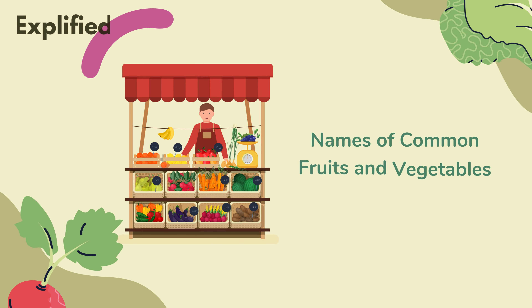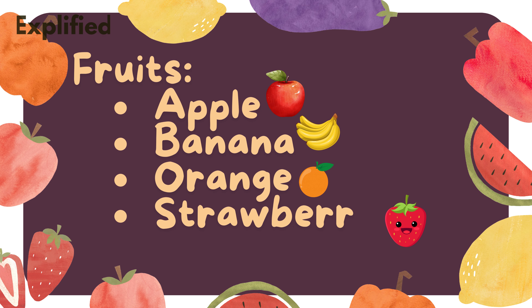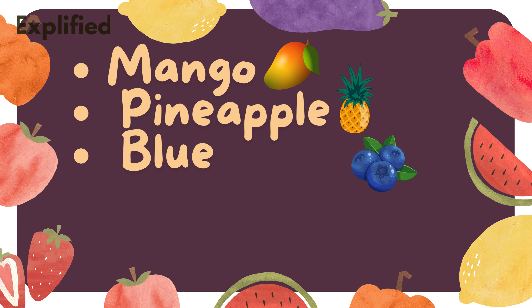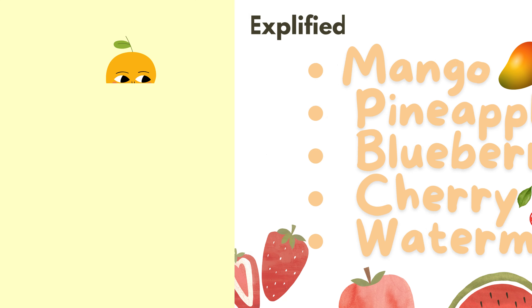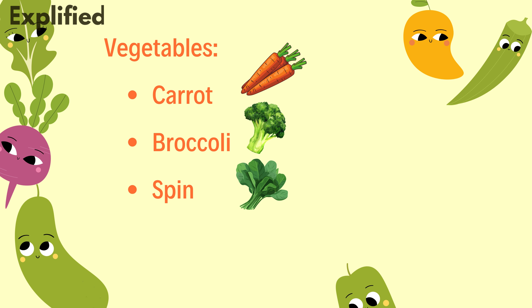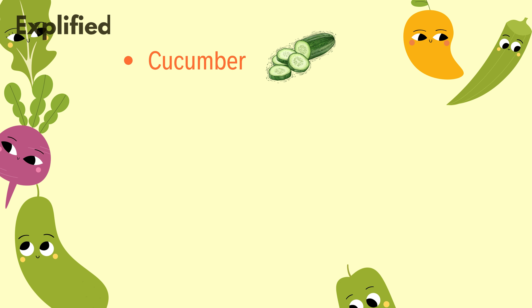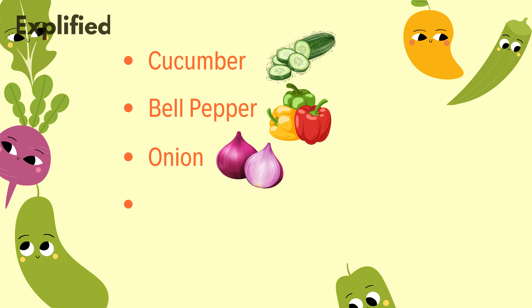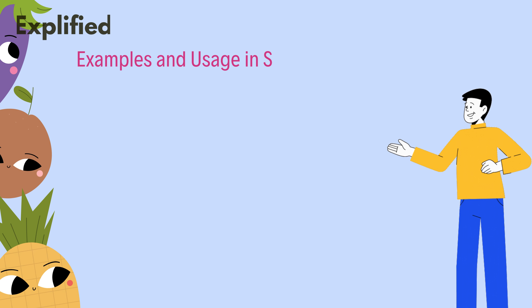Names of common fruits and vegetables. Fruits: Apple, Banana, Orange, Strawberry, Grapes, Mango, Pineapple, Blueberry, Cherry, Watermelon. Vegetables: Carrot, Broccoli, Spinach, Potato, Tomato, Cucumber, Bell pepper, Onion, Garlic, Lettuce.